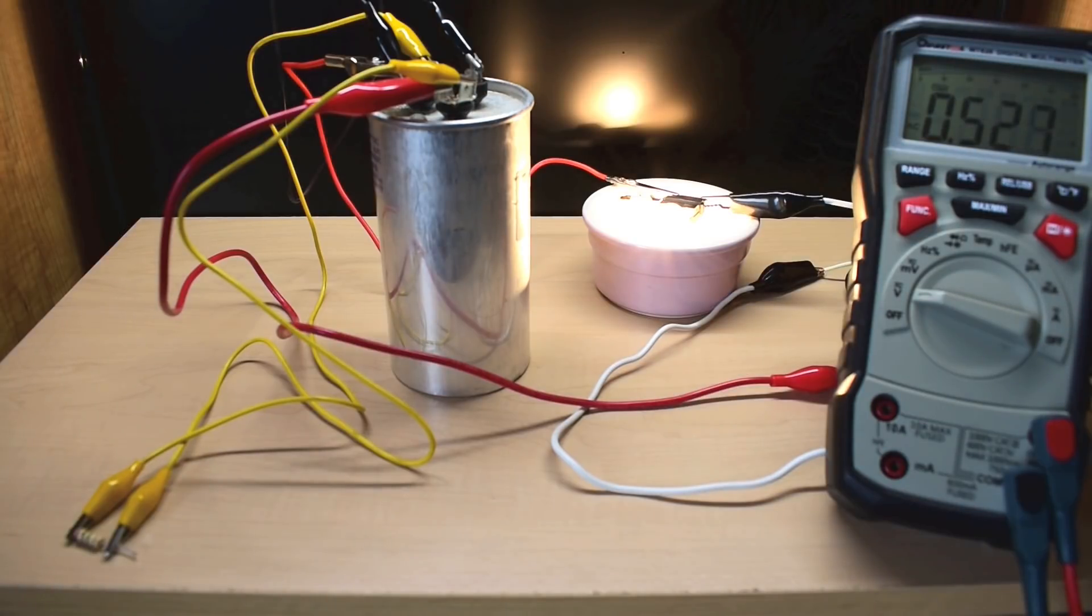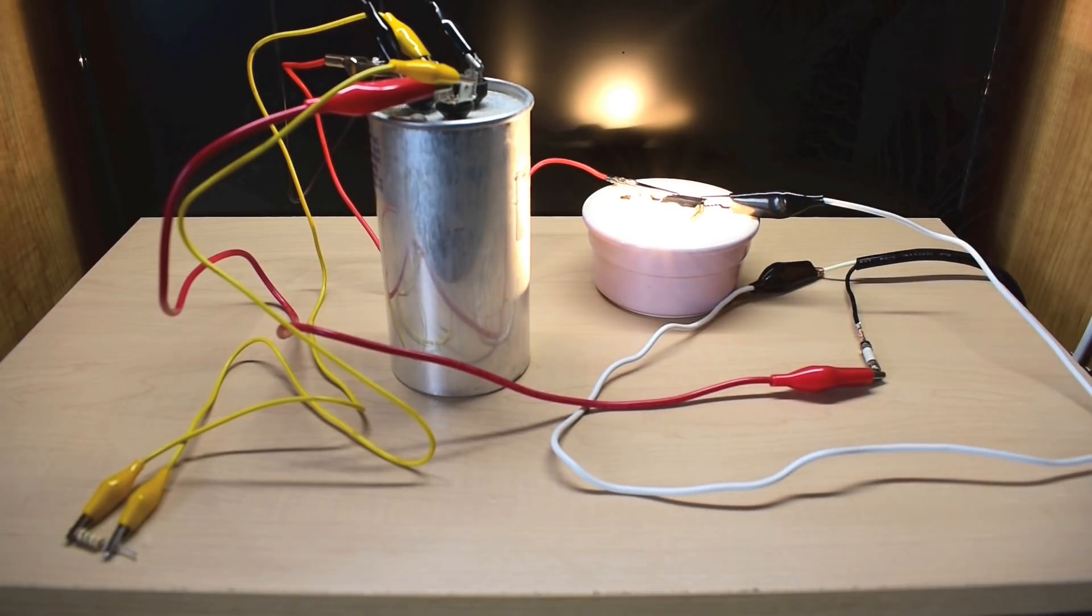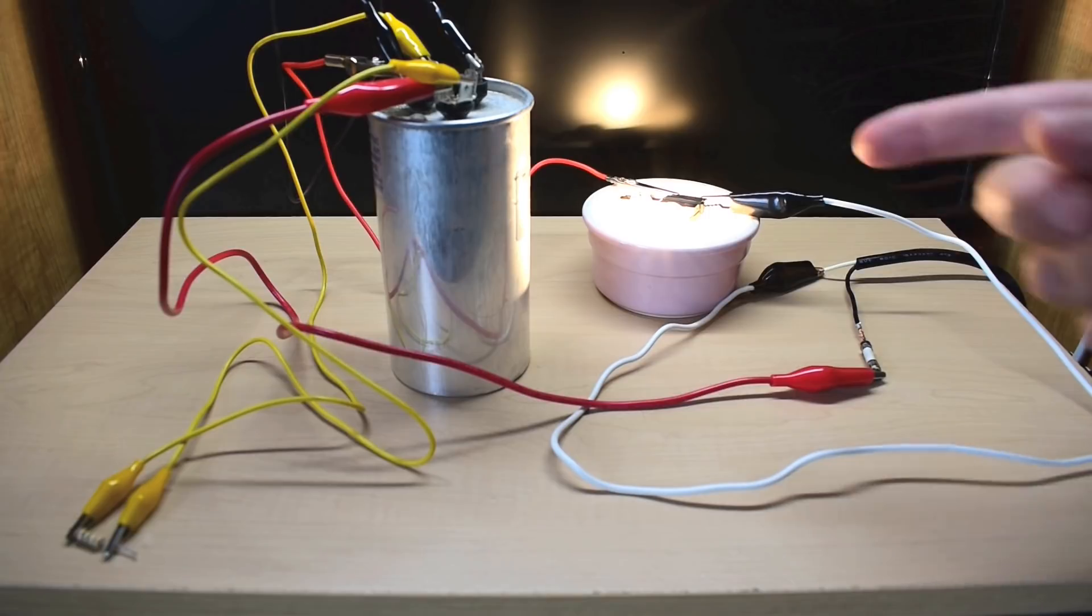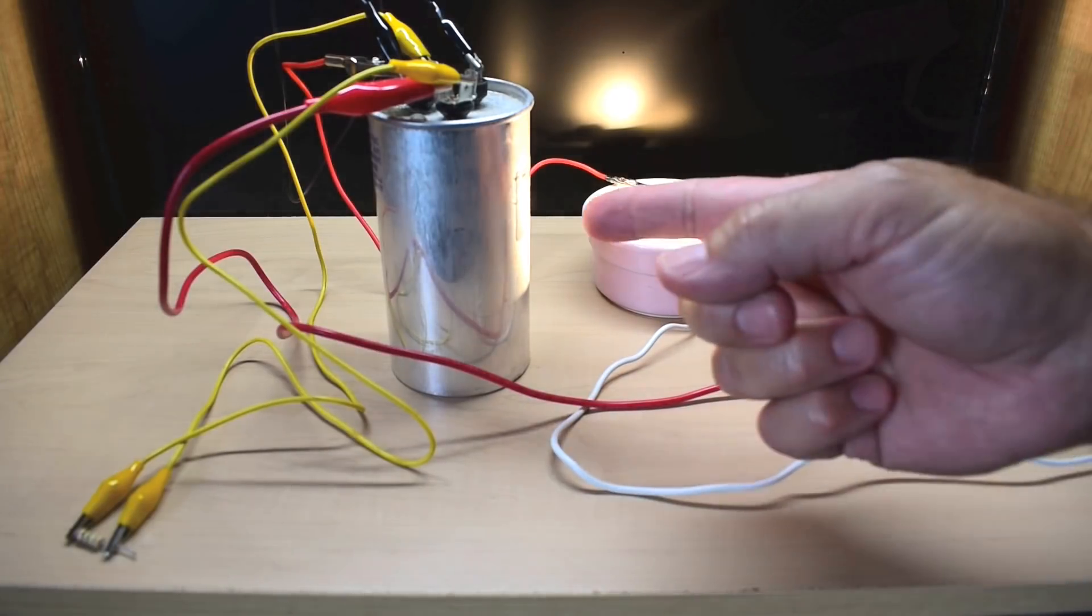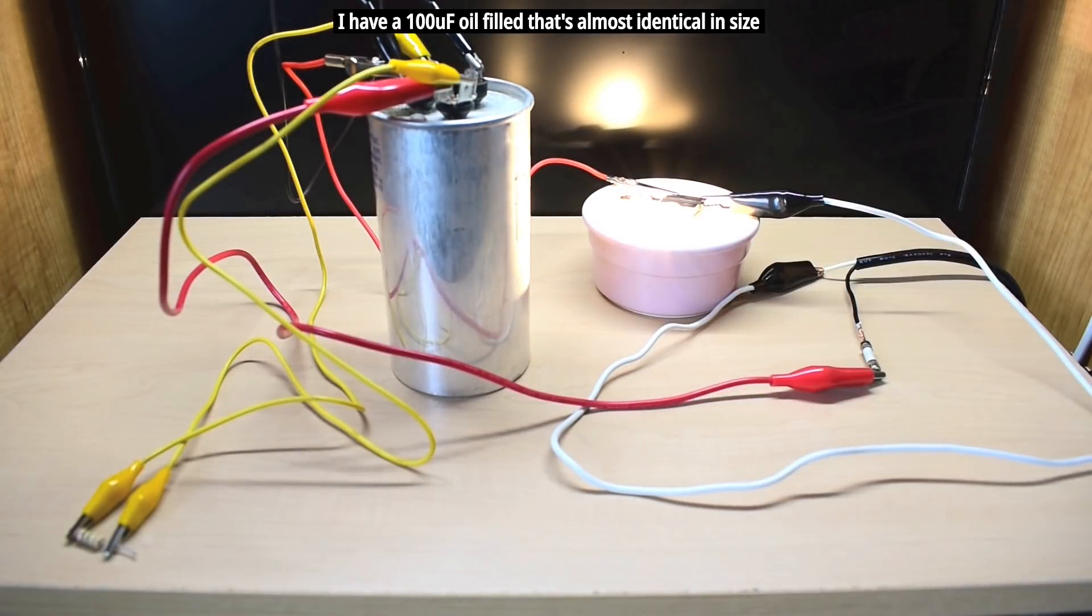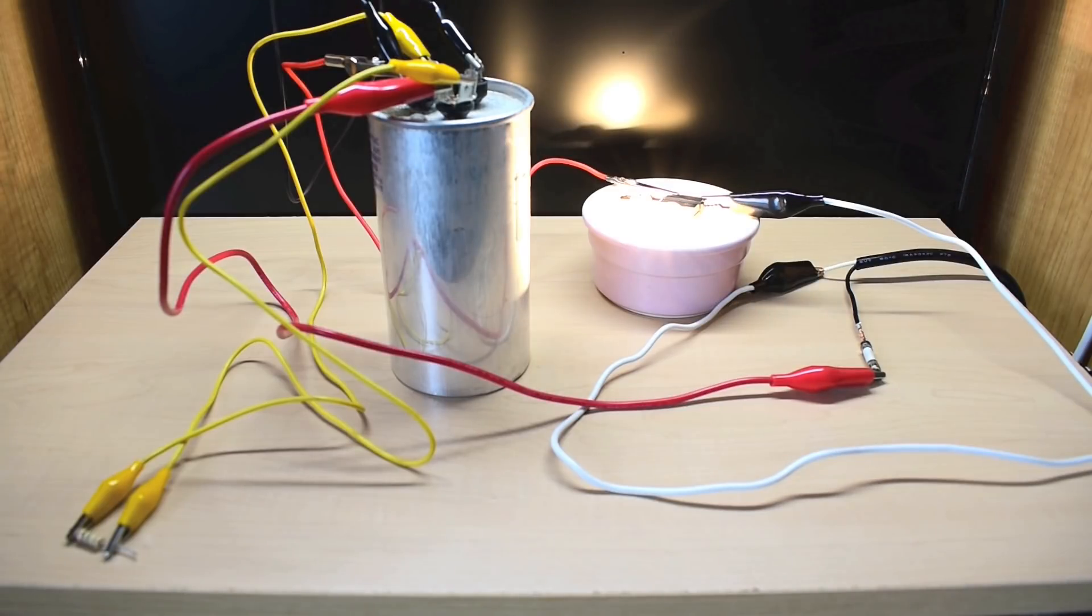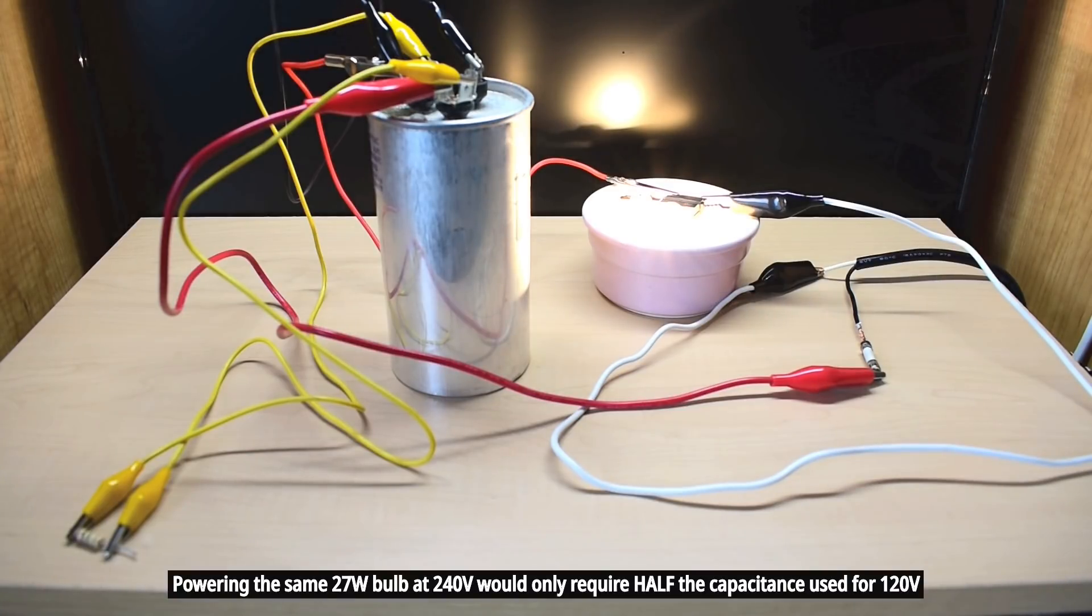So at 46 microfarads, which is very close to the value I came up with using the calculator, it's powering this bulb just fine. If you wanted to make it brighter to run at 14 volts, add another microfarad or two, and if this was a 50 watt bulb instead of a 27 watt bulb, what you would do is double the capacitance that you see right here. So instead of having 46, you'd be using right around 90 to power a 50 watt halogen, such as the type that's used for a car headlight.